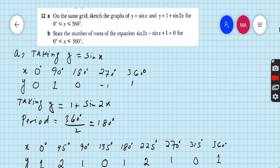So 0 degrees, sin 0 is 0, then sin 90 is 1, then 180 degrees, sin 180 is 0, then 270 degrees, sin 270 is minus 1, and then 360 degrees, sin 360 is 0. When we have a simple sin function, we just take a 90 degree gap on the x-axis.